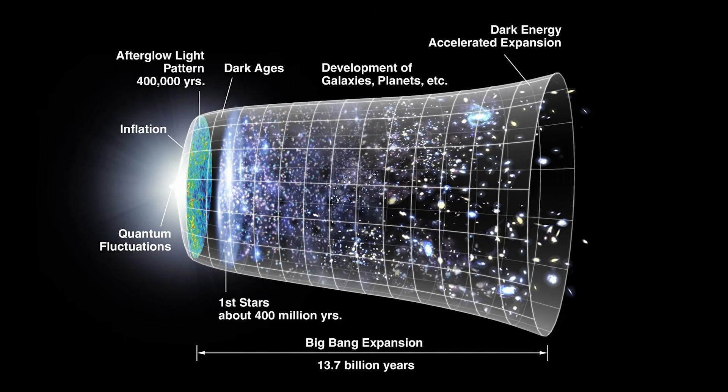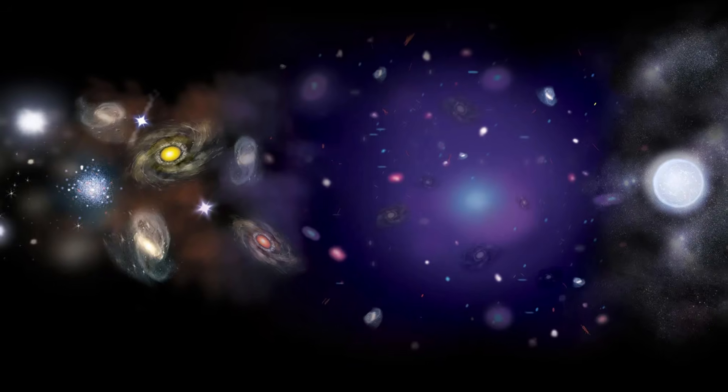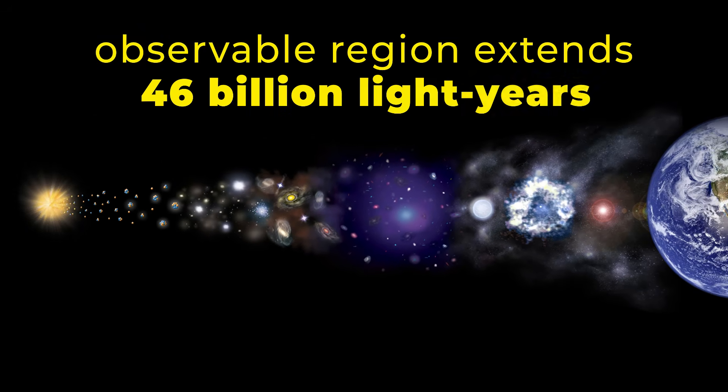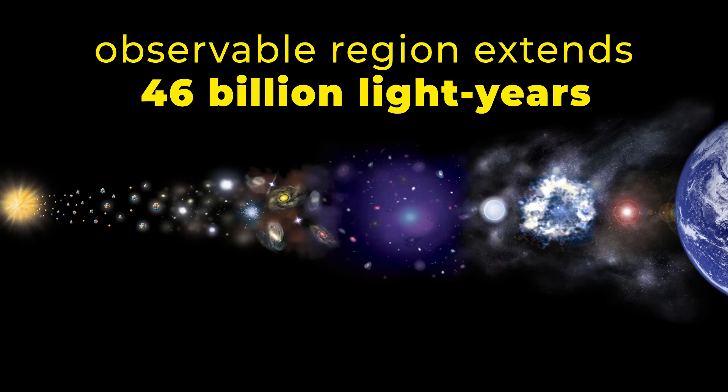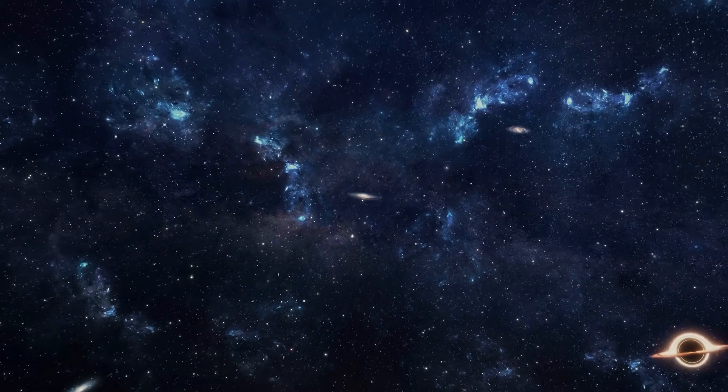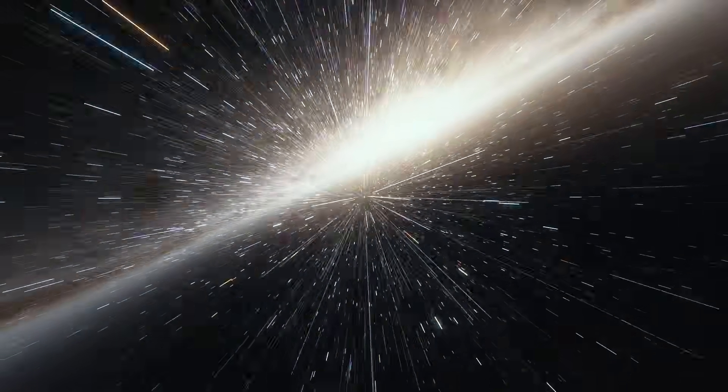The universe itself may be infinite. But what we can observe is not. From Earth, this observable region extends outward roughly 46 billion light years in every direction. Not because light traveled that far on its own, but because space itself expanded while the light was in transit. That expansion changes everything.